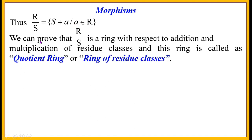We can prove that R/S is a ring with respect to addition and multiplication of residue classes. This ring is called the quotient ring or ring of residue classes.